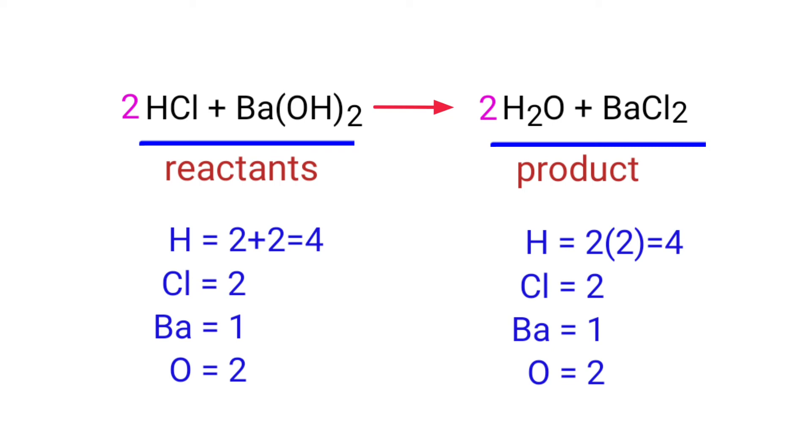There are 4 hydrogen atoms, 2 chlorine atoms, 1 barium atom, and 2 oxygen atoms on both sides.